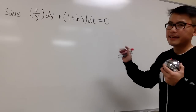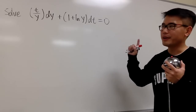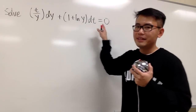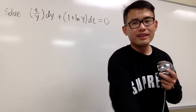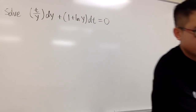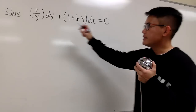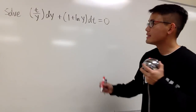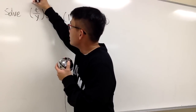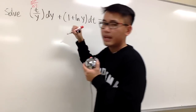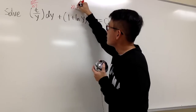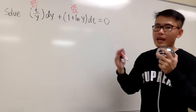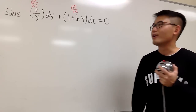It seems like this is an exact equation, so let's go ahead and do the check for exactness. If it's exact, we know how to solve it. Note that here we are talking about y and t, not the usual x and y. For an exact equation, that means there is a function — we call it capital F — so that this term is the partial of F with respect to y, and this term is the partial of F with respect to t, because an exact equation came from the total differential of a function of two variables.